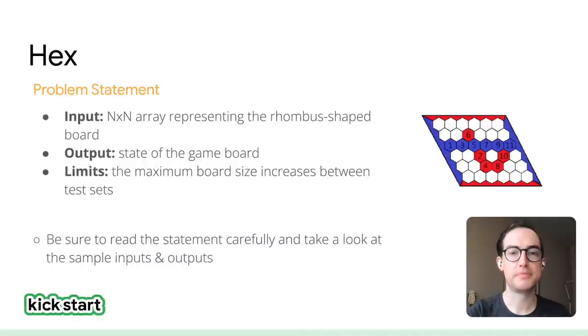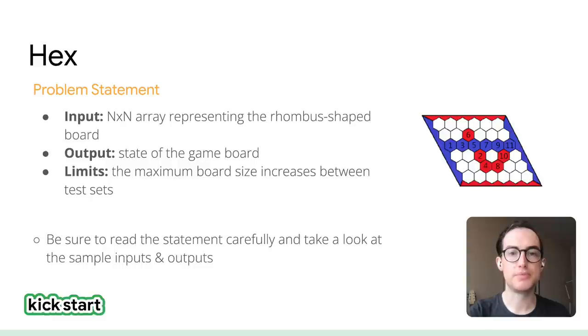Hi everyone, my name is Brendan and I'm a software engineer at Google. I help support our mobile developers to deliver awesome user experiences on Google's Android and iOS apps. Before joining Google, I always looked forward to participating in the Google Code Jam competition every year. Unfortunately, now that I've started working here at Google I'm not allowed to compete, but that won't keep me away. I'm here to walk you through the problem Hex. The critical pieces of any problem statement are the inputs, outputs, and limits. The inputs are an N-by-N array representing the rhombus-shaped board, plus N. The output is one of four possible board states: blue wins, red wins, nobody wins, or impossible. The limits indicate that the maximum board size increases between test sets: N ≤ 10 for test set 1, and N ≤ 100 for test set 2.